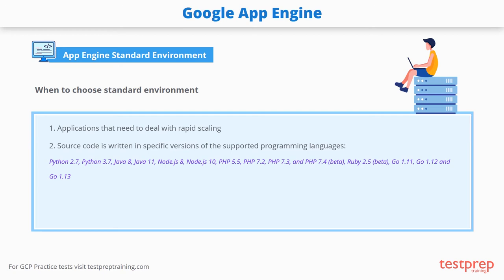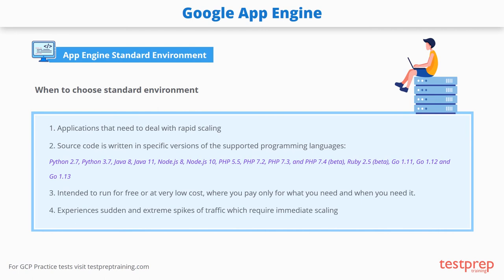You should also choose the standard environment when the source code is written in specific versions of supported programming languages, or when you intend to run your app at very low cost — paying only for what you need and when you need it. For example, your application can scale to zero instances when there is no traffic. It is also a good fit when your application could experience sudden and extreme spikes of traffic which require immediate scaling.